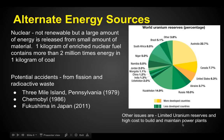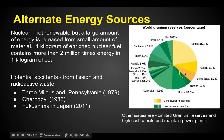We want to use nuclear, but there's a limited amount of uranium. Where is the most uranium found? Australia is a huge source, with some in Canada, some in the United States, and Kazakhstan is another big area where uranium reserves are found.